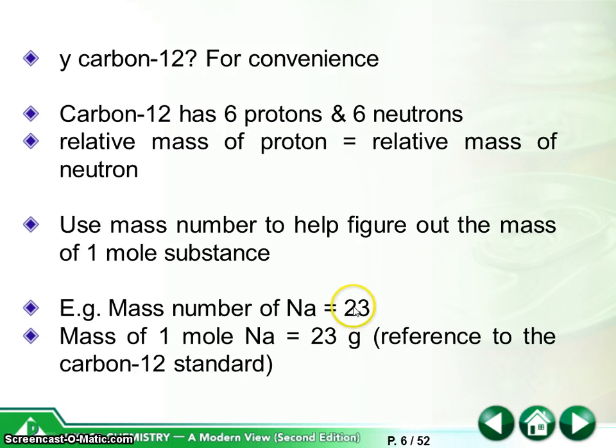We have defined that one mole of carbon has 12 grams and there are 12 protons and neutrons in carbon. So by ratio of 12 to 23, then we will have this mass. So we call this mass is under the scale of the carbon-12 standard.